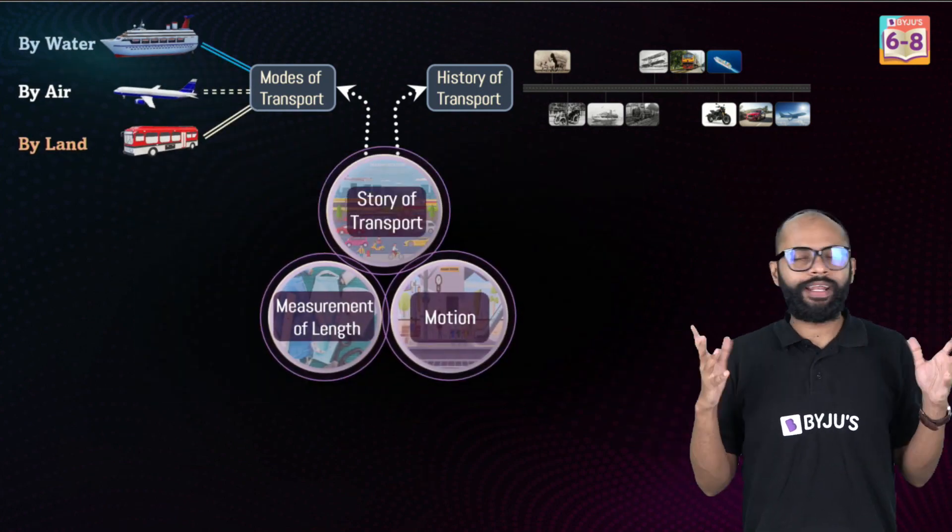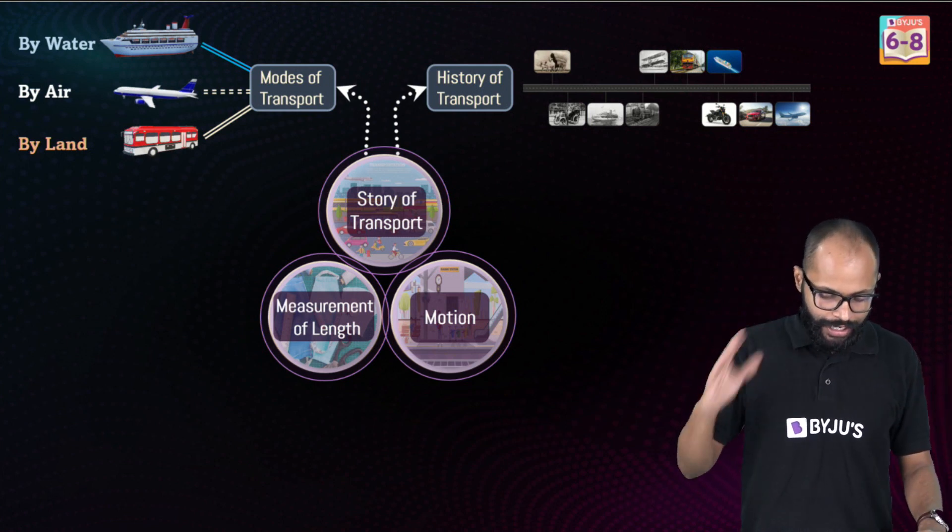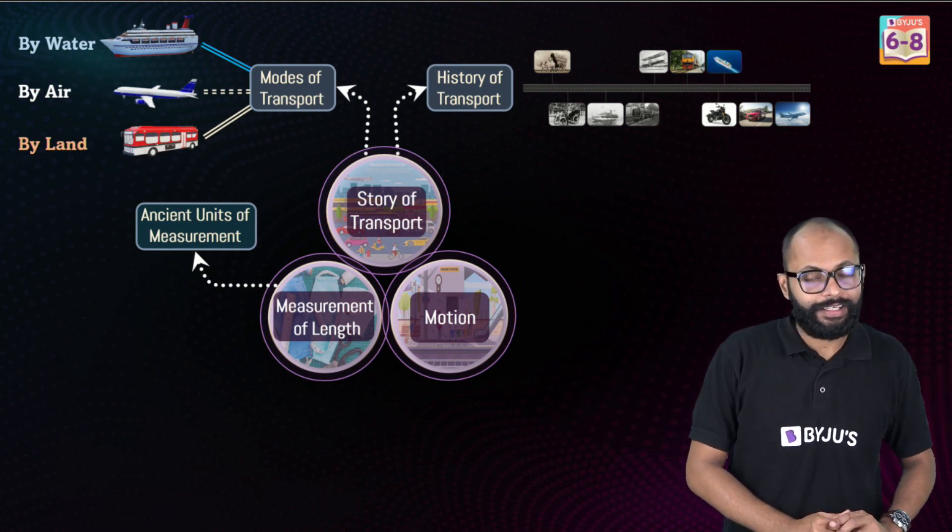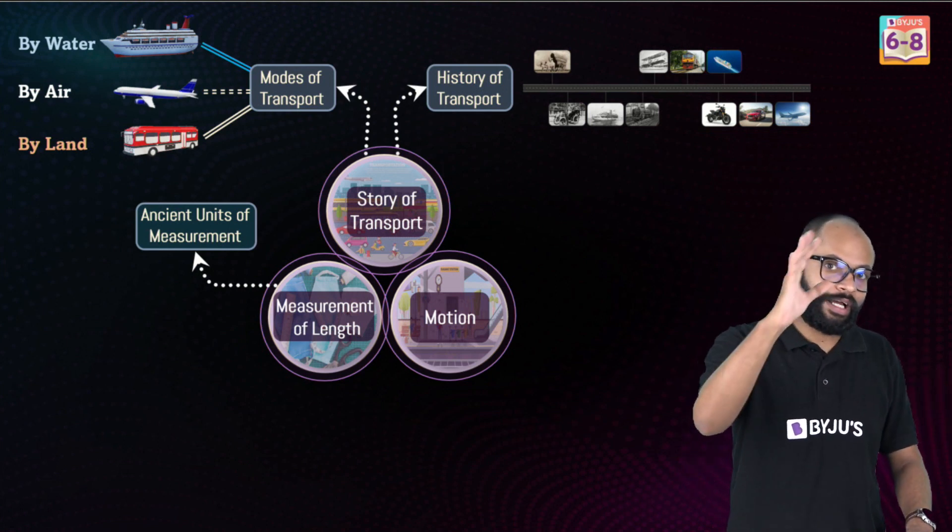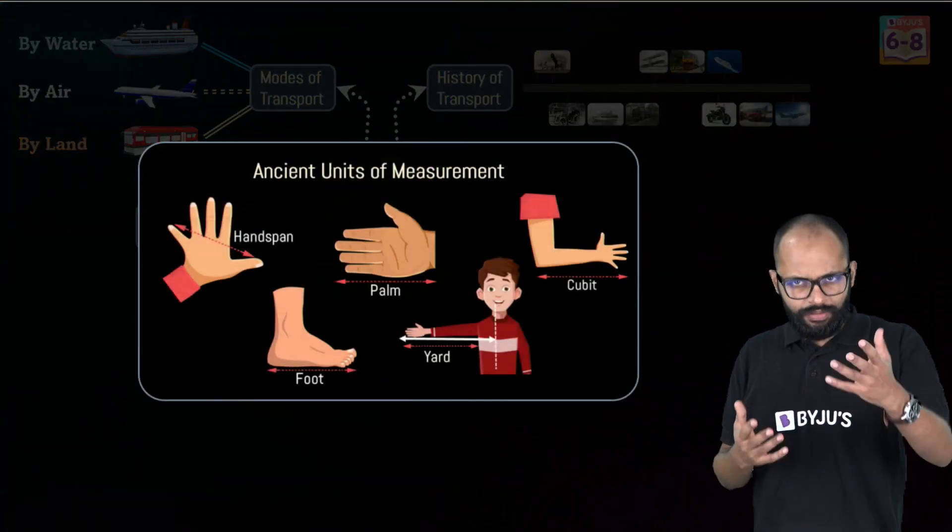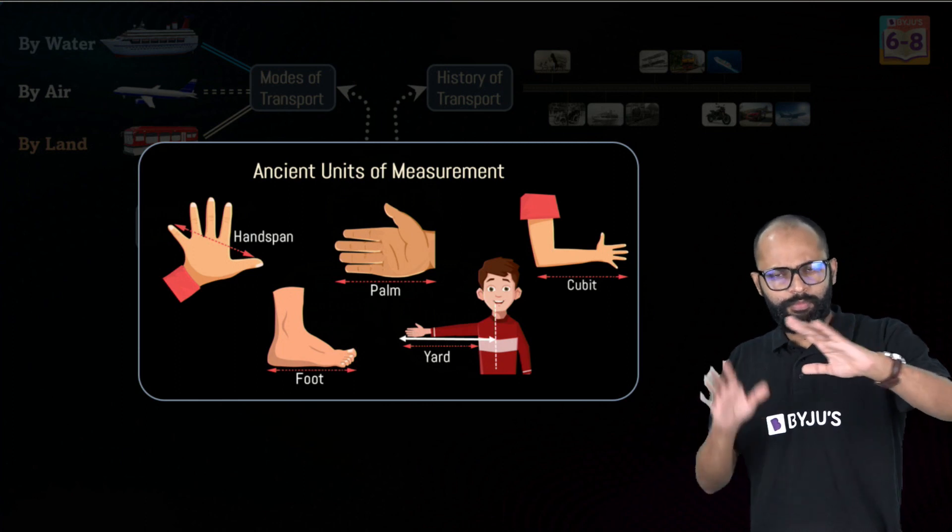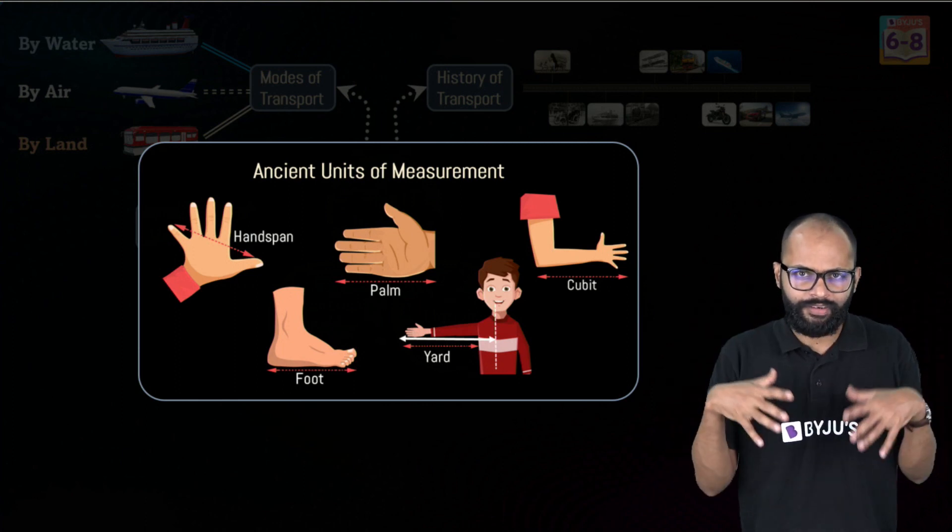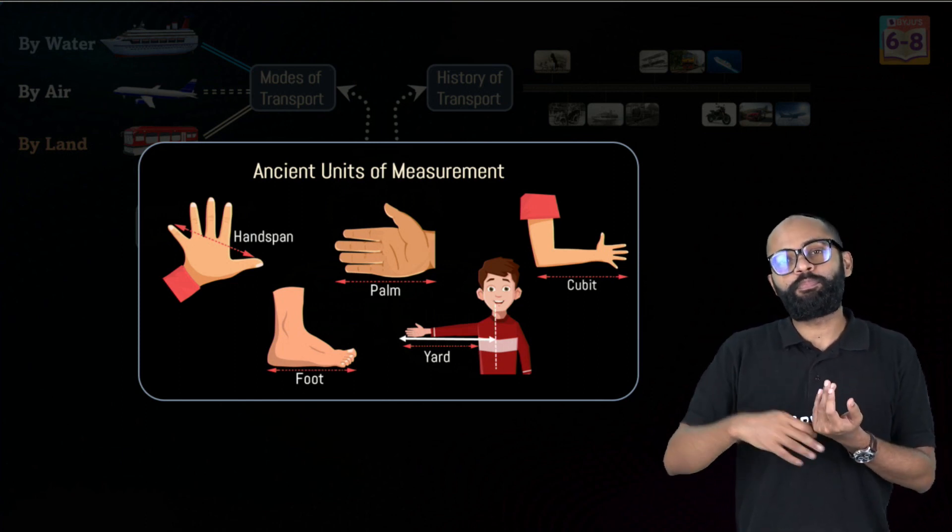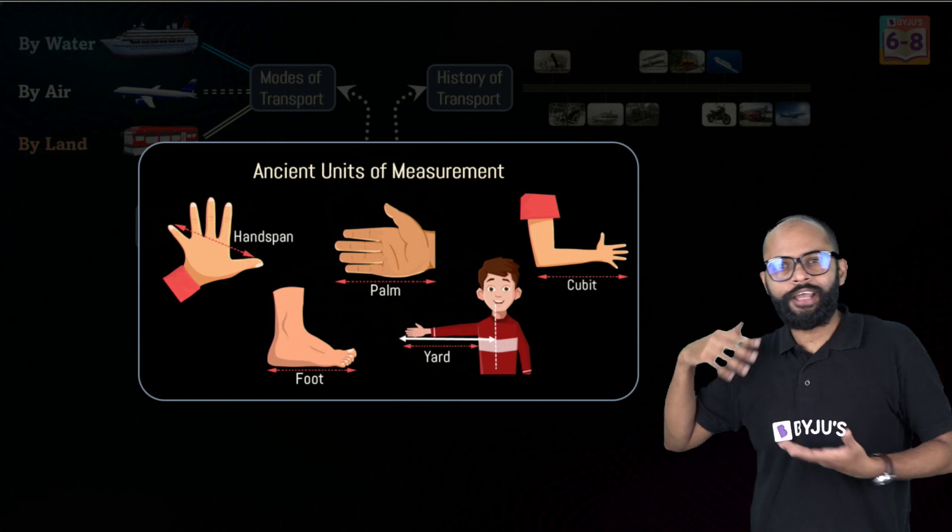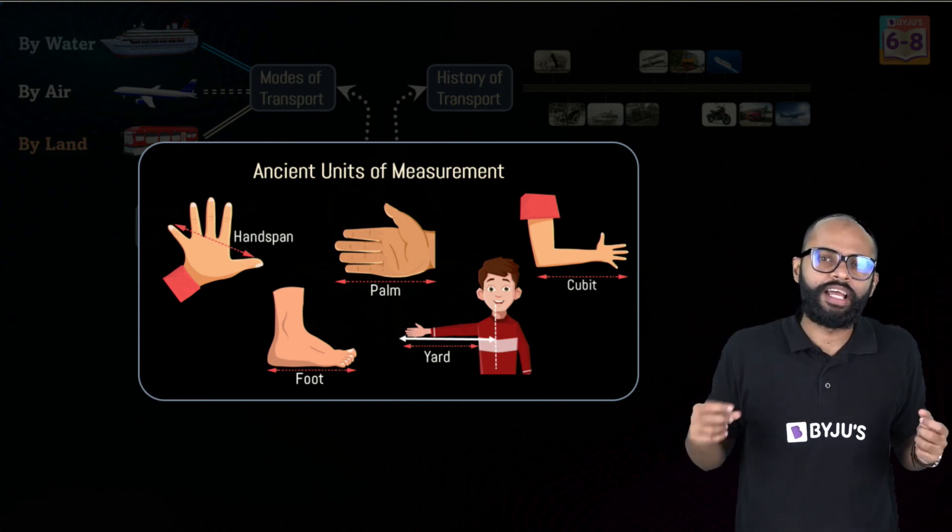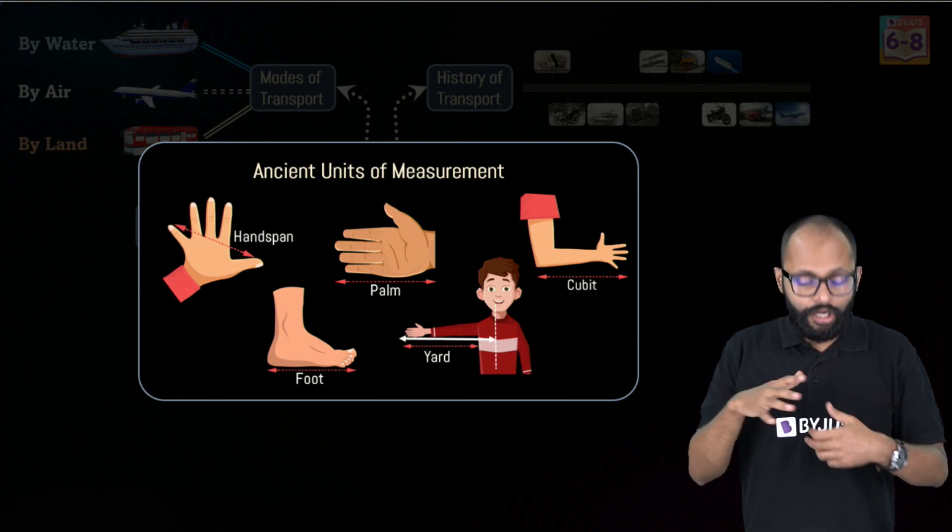With this story of transport is done. Measurement of length - this is where questions can come and this is interesting and important also. Ancient units of measurement - we have done a session on this right? I was wearing the dress of a king. In this session we talked about in olden times people did not have scales or rulers.